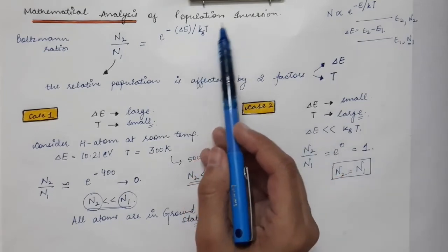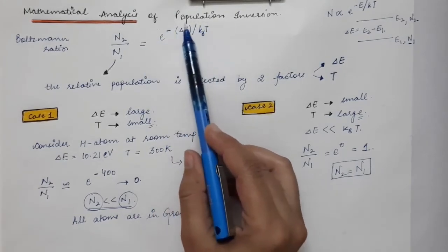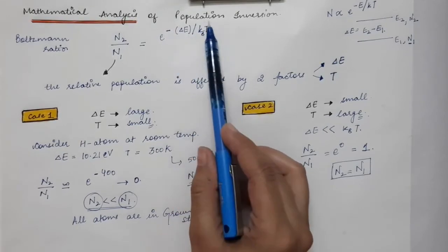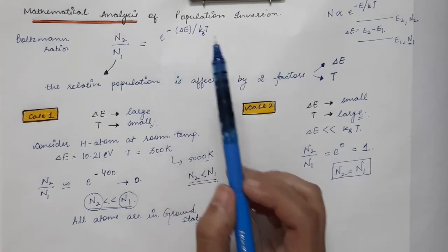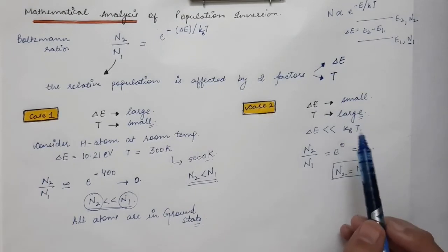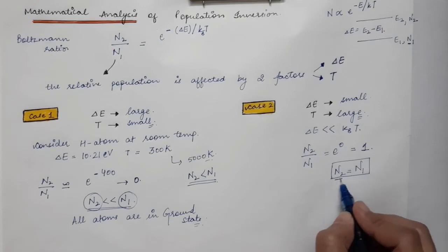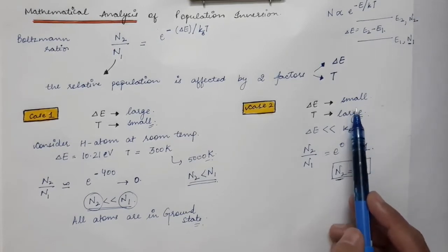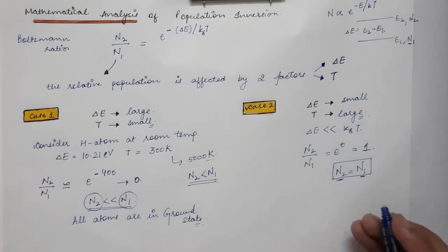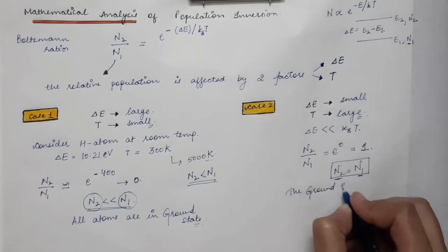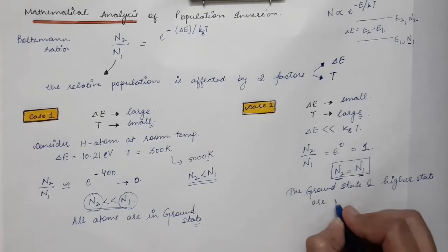Even if temperature is taken to infinity, the exponent ΔE/kBT approaches zero and the ratio n2/n1 still equals e^0 = 1. So even at very high temperatures, n2 equals n1 — the ground state and the higher energy state are equally populated. Decreasing the energy difference and increasing temperature at most equalizes the populations.